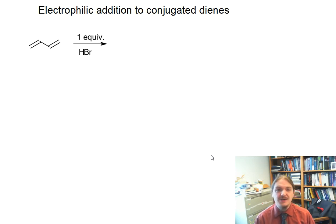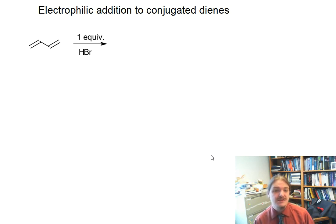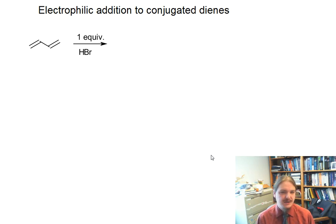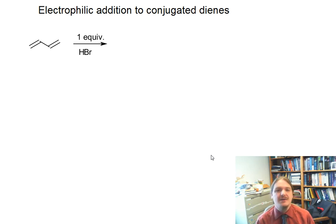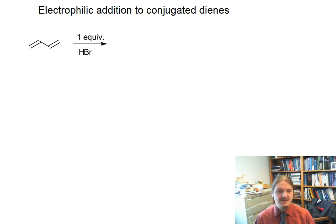In this video, I'm going to talk about the electrophilic addition reactions of conjugated dienes. I'm going to use the addition reaction of one equivalent of hydrogen bromide as my prototypical reaction, but generally any electrophilic addition reaction that forms a carbocation or carbocation-like intermediate could yield similar results in addition reactions of conjugated dienes.